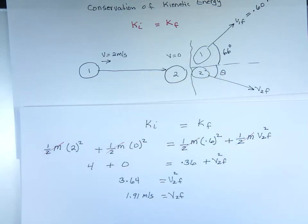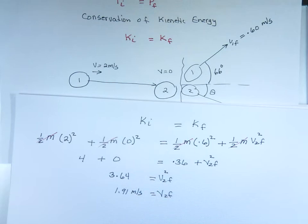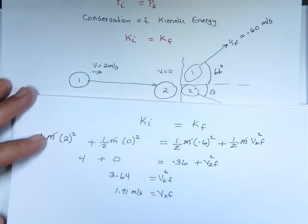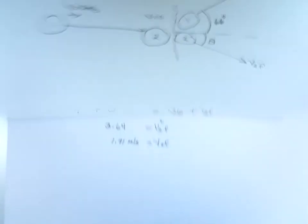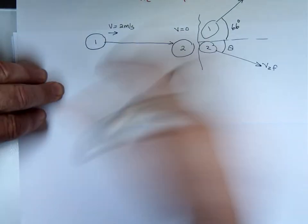How do we get what theta is? Now we're going to use conservation of linear momentum. But we've got a problem — motion is in 2D, so you've got to break it down into the x-component and the y-component. We've got to look at it in both directions. Let's do conservation of linear momentum in each direction and see if we can solve the equations.